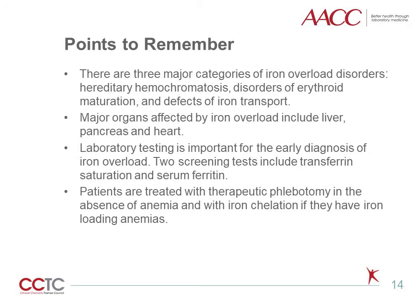Some take-home messages are: there are three major categories of iron overload disorders — hereditary hemochromatosis, disorders of erythroid maturation, and defects of iron transport. Major organs affected by iron overload include liver, pancreas, and heart. Laboratory testing is important for the early diagnosis of iron overload; two screening tests include transferrin saturation and serum ferritin. Patients are treated with therapeutic phlebotomy in the absence of anemia and with iron chelation if they have iron-loading anemias.